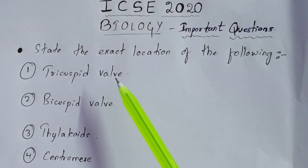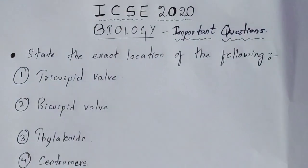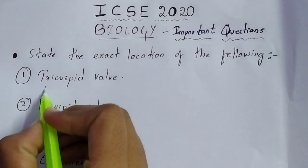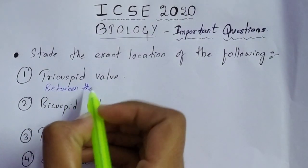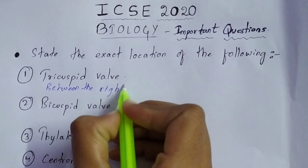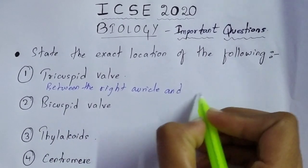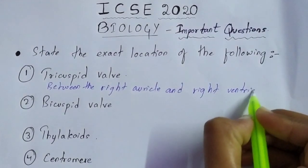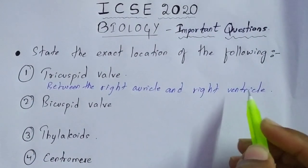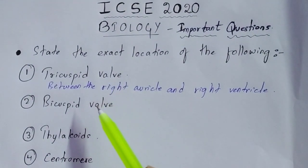The first question is the tricuspid valve. You have to give the exact location of the tricuspid valve. The tricuspid valve is located in between the right auricle and right ventricle. Keep this in mind because the location of the bicuspid and tricuspid valve is frequently asked.